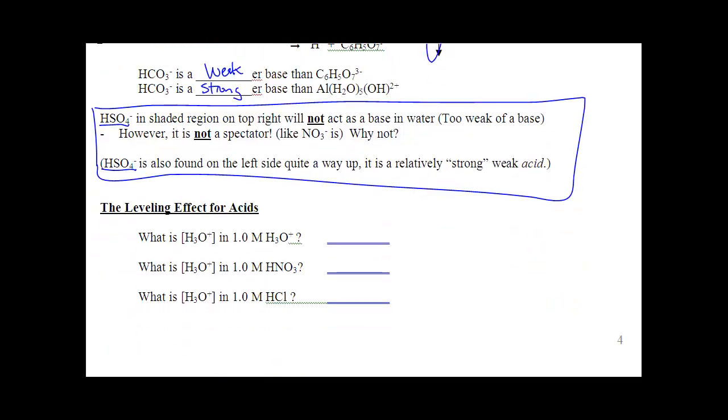One other little definition, the leveling effect. The leveling effect says that the top six acids are equally as strong. They all ionize 100%. You can't rank the top six acids. They're all strong. Bottom bases are equally as strong. You can't rank strong things. They ionize 100%.